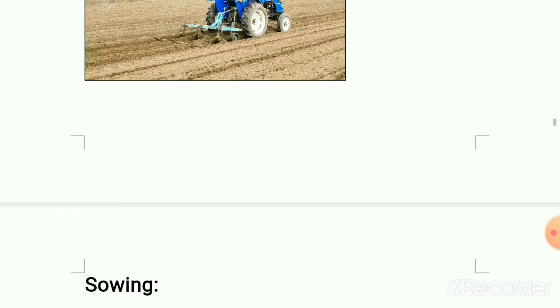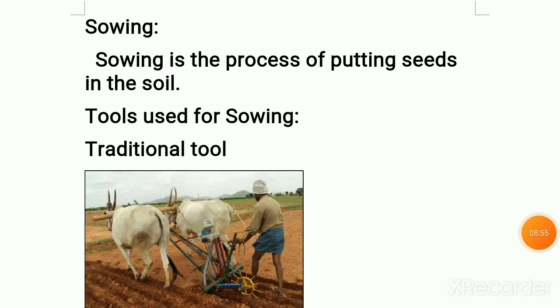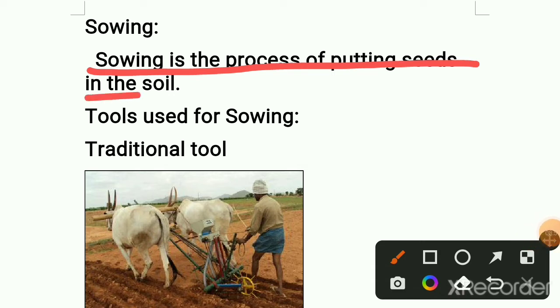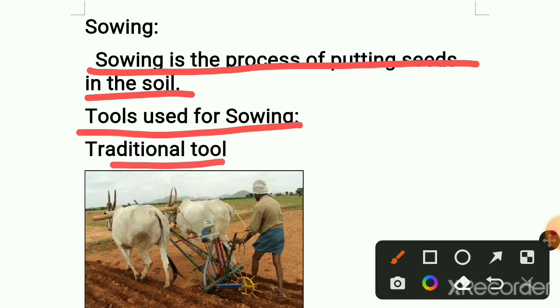Next — sowing. Sowing is the process of putting seeds in the soil. Sowing is nothing but planting seeds or putting seeds in the soil which actually forms a crop. There are two tools used for sowing: a traditional tool used in ancient times, and a modern tool — the seed drill.